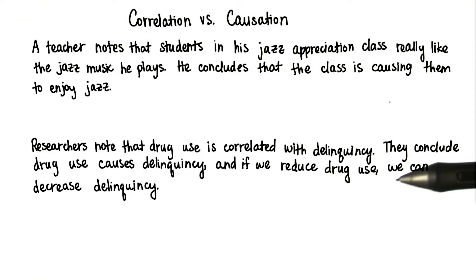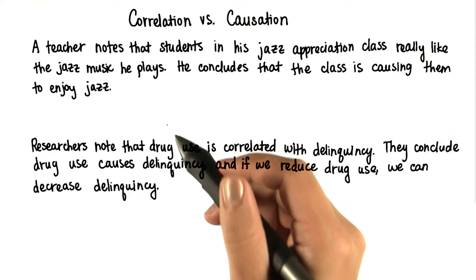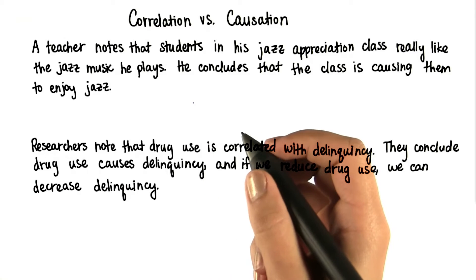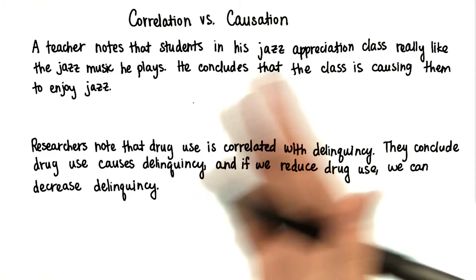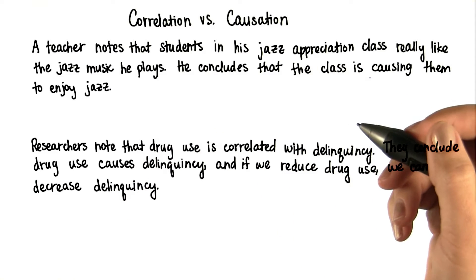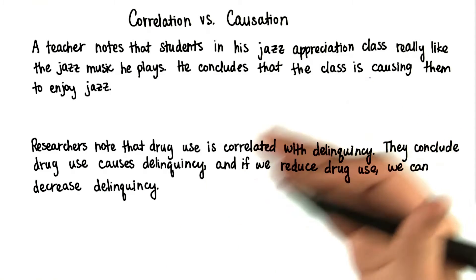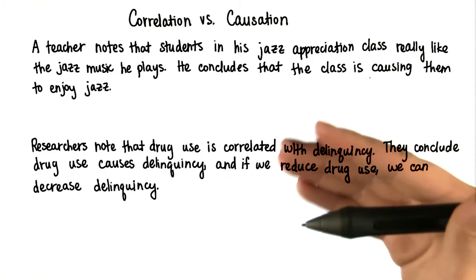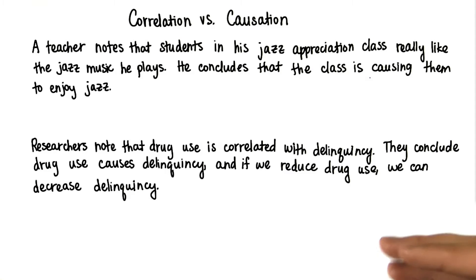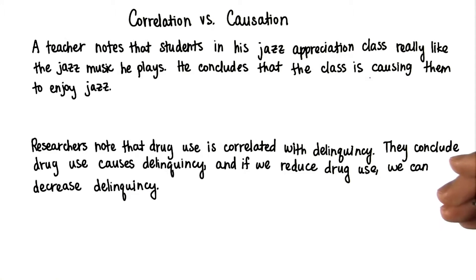What's wrong with the logic in each of these situations? In the case of the jazz music, perhaps students really liked jazz before, and that's why they took the jazz appreciation class, rather than the jazz appreciation class causing them to like jazz. For the second situation, it's possible that people were delinquent, and that's why they started using drugs.